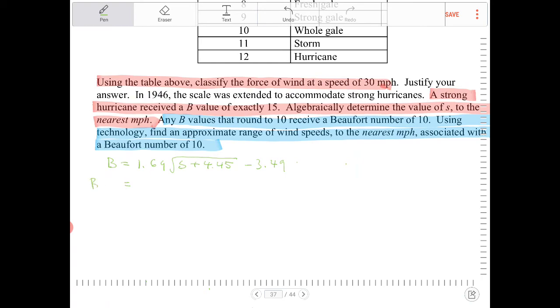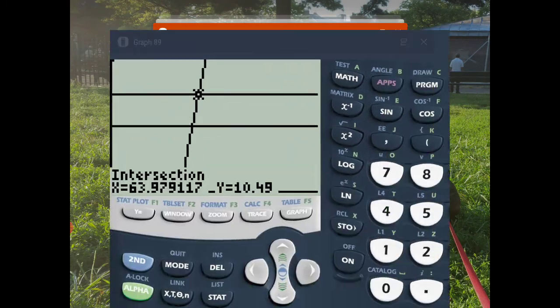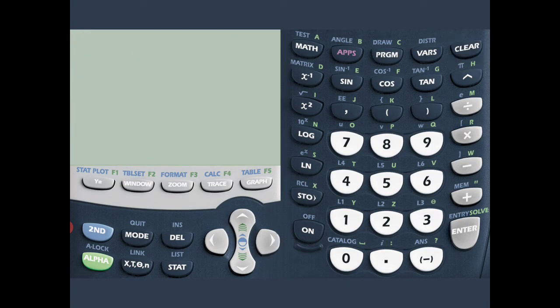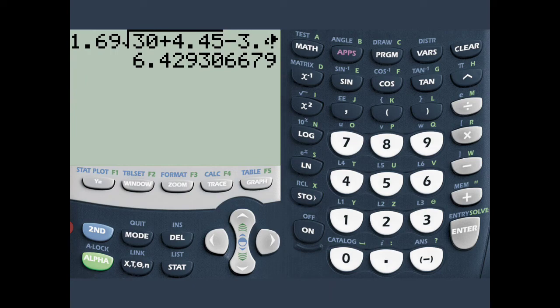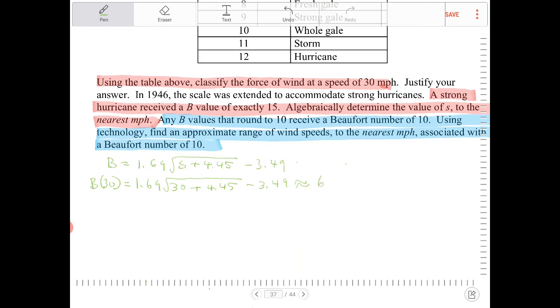This is going to be b of 30, and that's going to be 1.69 square root of 30 plus 4.45 minus 3.49. And this will give us roughly something. So let's punch this into the calculator. 1.69 square root of 30 plus 4.45 minus 3.49, 6.4.